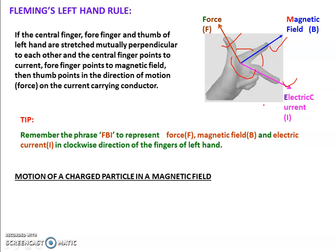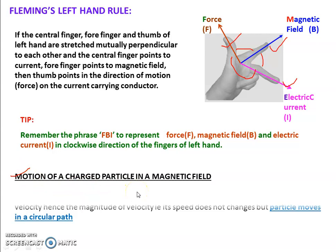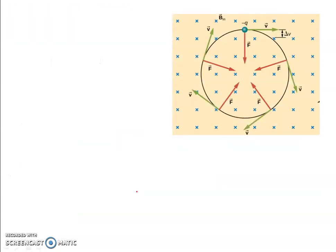Motion of a charge particle in a magnetic field — this is a very important topic. This shows a perpendicular magnetic field; the cross symbols mean the direction of the magnetic field is inward. The magnetic field lines are symmetrically distributed, meaning this is a uniform magnetic field.